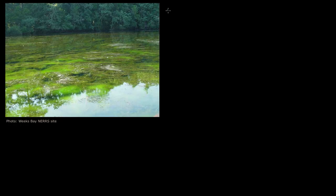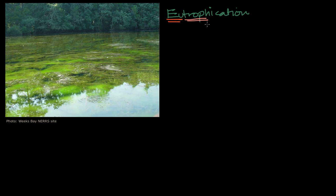We're now going to talk about something called eutrophication. It's derived from the Greek for 'well-nourished' — 'eu' referring to well, and 'trophia' referring to nourished or nourishment. You might think this is a good thing, but as we'll see over the course of this video, this is really about over-nourishment, to the point that it's causing very bad things to happen in our biosphere.